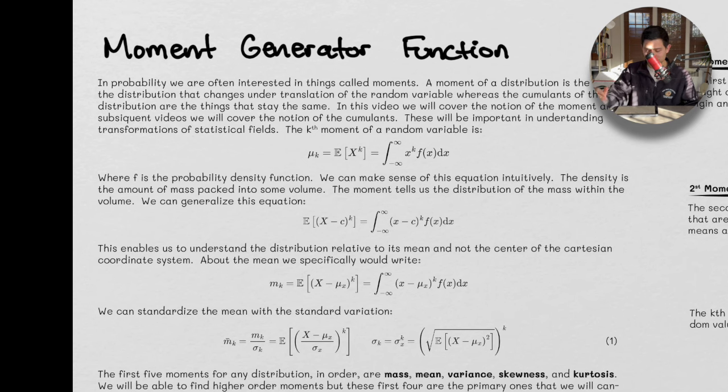In probability theory, we're often interested in things called moments. A moment of a distribution is the part of the distribution that changes under translation of the random variable, whereas the cumulants of a distribution are the things that stay the same. So we already have this lingo of invariant things and things that are not invariant. And this is, we're starting to talk about, this is a little bit of language of physics, like invariant under some sort of translation or some sort of rotation or something like that.